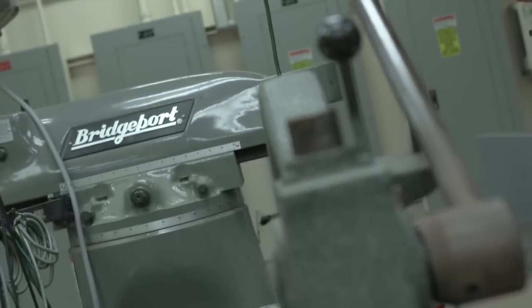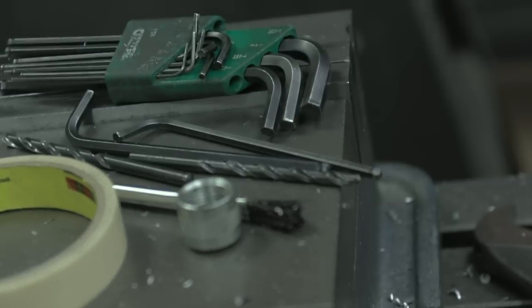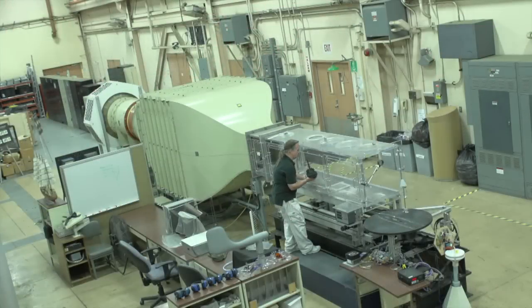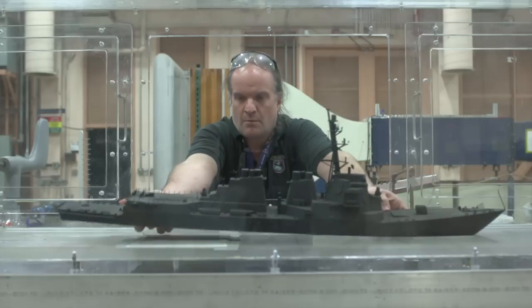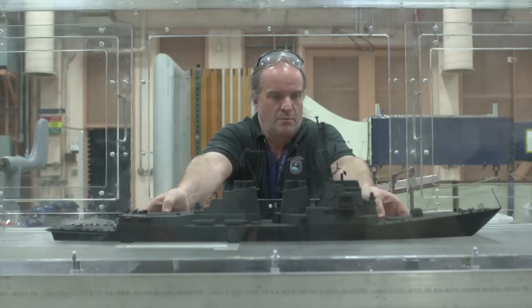A typical wind tunnel test is performed by first designing the model. Once we've designed it to be able to accommodate all of the loads that are going to be placed on it when it's in the wind tunnel, we'll actually go and manufacture the model. We'll instrument it, we'll mount it in the wind tunnel, we'll then button up the wind tunnel and turn on the wind.